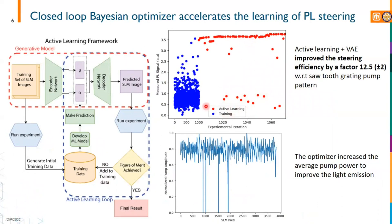This factor of 12 was an interesting result where the active learning figured out how to increase the average pump power hitting the metasurface, such that more pump light gives you more light emission. This was the first result of physical significance that the machine learning learned.